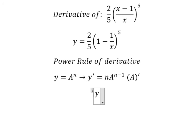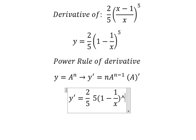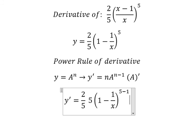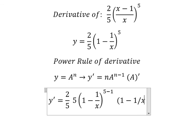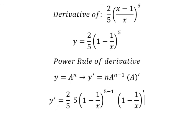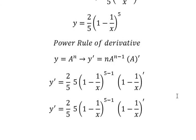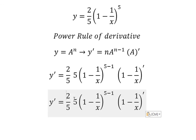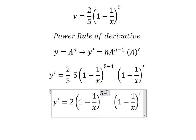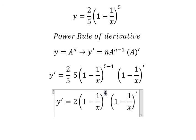We have like this. So number 5 and number 5 we cancel, 5 minus 1 we have number 4. This one we have 1 over x.